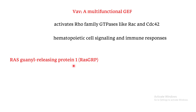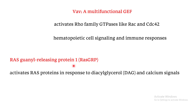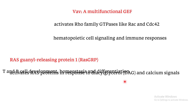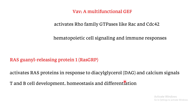The last example from the GEF family is RAS guanyl releasing protein 1, or RASGRP1. This GEF activates the RAS protein in response to DAG and calcium signals. This activation is very important in T and B cell development, homeostasis, and differentiation.